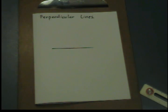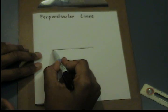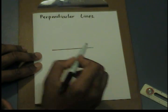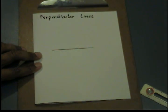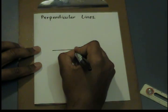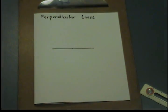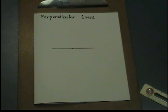Let's start with constructing a perpendicular line using a point on the line. First, create a line. Let's place a point near the center of the line. Next, using that point on the line, we're going to create two more points.